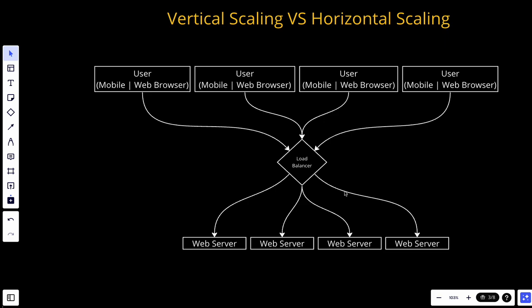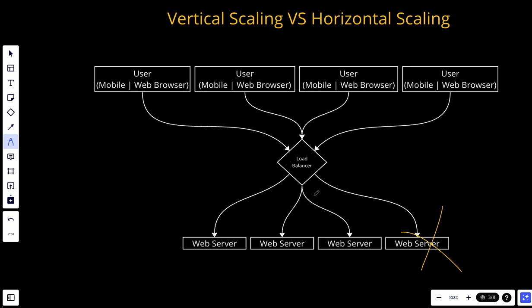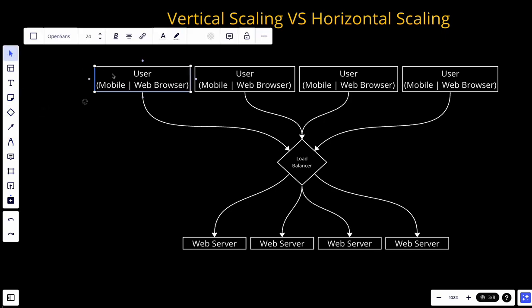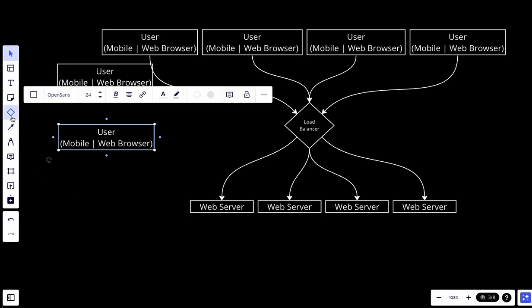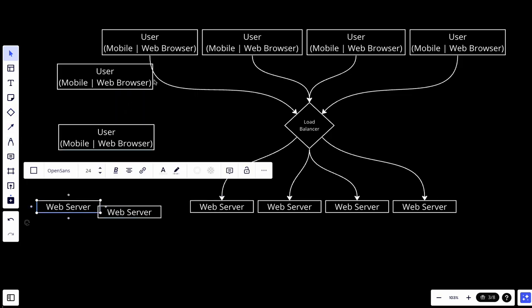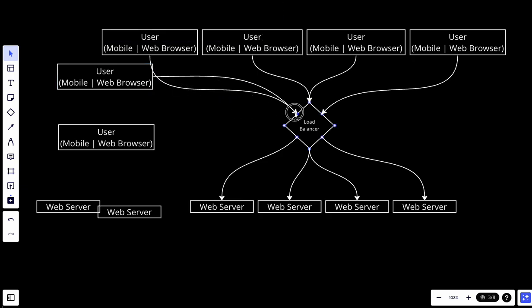The second benefit is high availability. Load balancers can detect when a server becomes unresponsive or experiences a failure. In such cases, the load balancer automatically redirects the traffic to a healthy server. So basically if this server went down, the load balancer would immediately know and direct all incoming requests to another server instead. Third, we have scalability: a load balancer supports horizontal scaling by allowing new servers to be added. If we have more users, we can add more servers, and the load balancer can serve them with no problem.